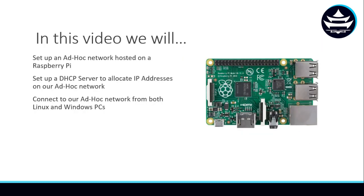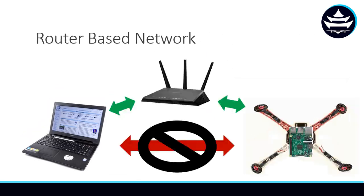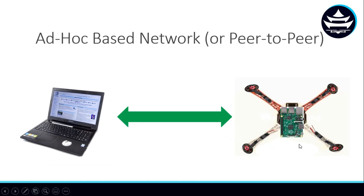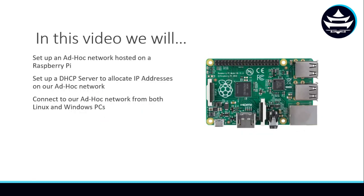So in this video, we're going to be setting up an ad hoc network that is hosted on a Raspberry Pi, and then we're going to set up a DHCP server to allocate IP addresses on our ad hoc network. In the router-based network, the router assigns IP addresses to the laptop and to the Raspberry Pi. But in an ad hoc-based network, we don't have that router assigning IP addresses, so we're going to make our Raspberry Pi assign IP addresses to anything that connects to it. And then the last step, we're just going to connect to our ad hoc network from both a Linux and Windows PC. Connecting from Linux is easy enough, but there are some steps we have to take in Windows to allow that ad hoc communication to happen.